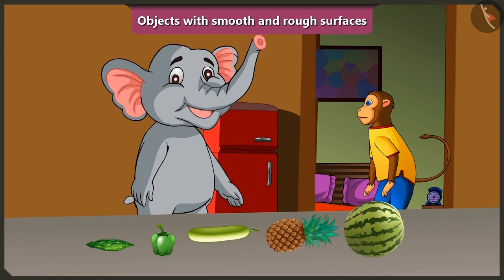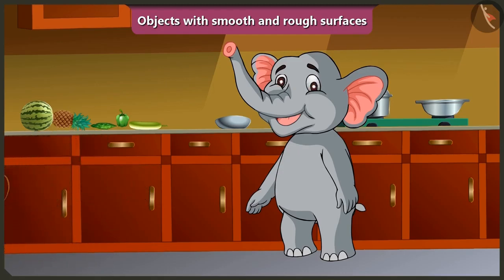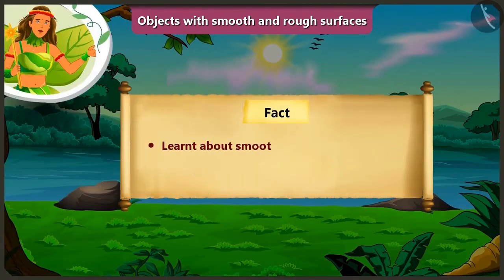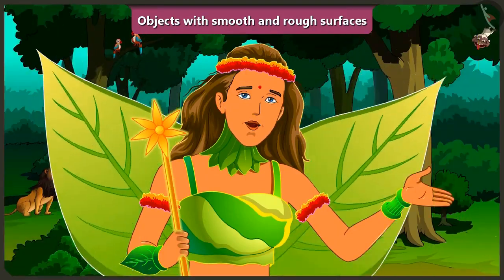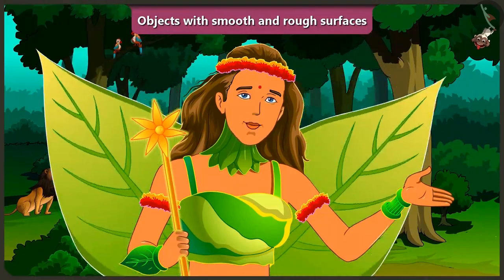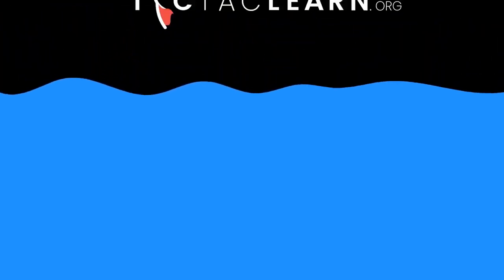Oh wow, Appu! Well done. Okay Appu, I will take your leave now. Okay then, see you again — bye! So today we have learned about the things that are around us with smooth and rough surfaces. In the next video, we will learn the characteristics of the round things that are around us.